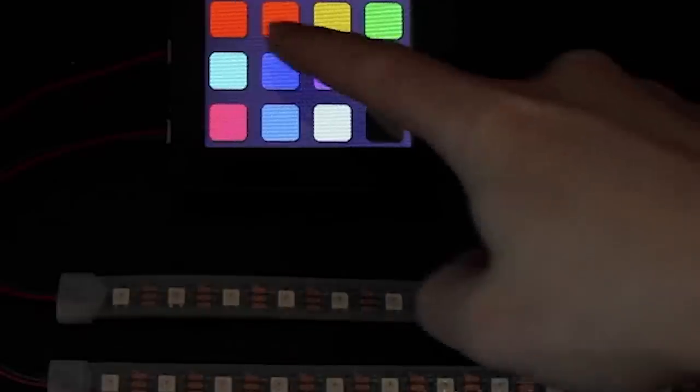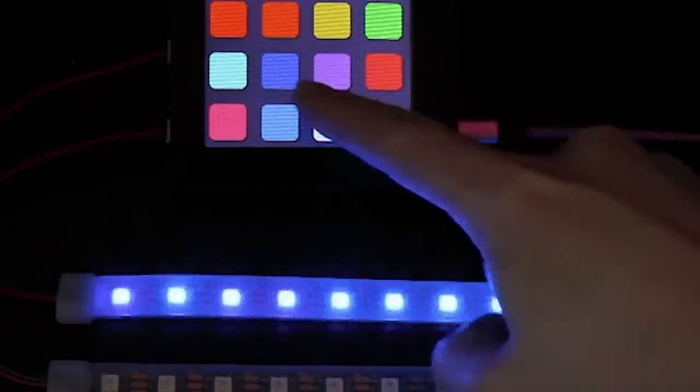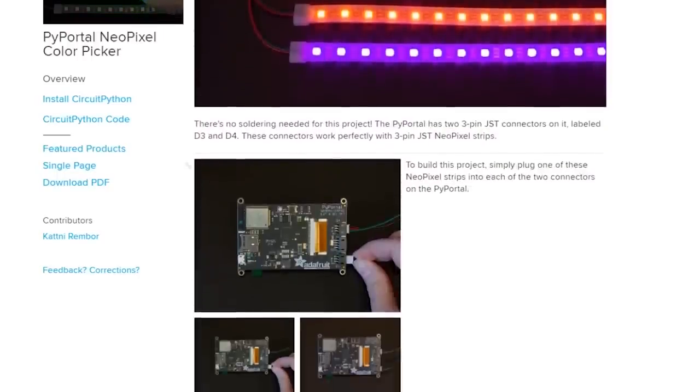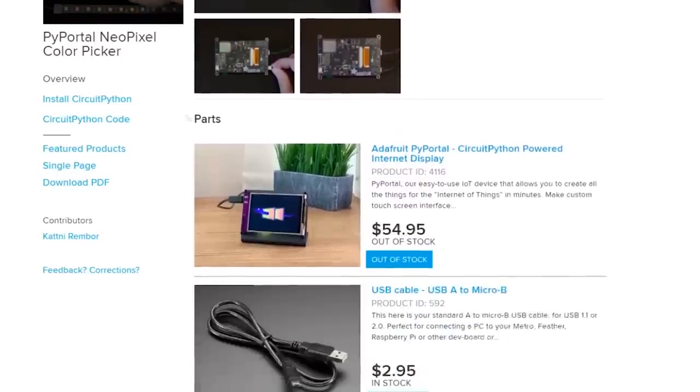Taking advantage of the JST connections on the back of the Pi Portal, Katni Rambor shows how to use one as a color picker for two strips of NeoPixels. You can assign different colors to each one or sync them together to control both at once.